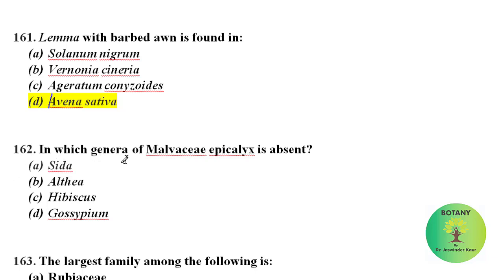In which genus of Malvaceae is epicalyx absent? Epicalyx is an additional whorl around the calyx of a flower, and it is a modification of bracteoles. In almost all genera of Malvaceae, epicalyx is present, but it is absent in Sida.